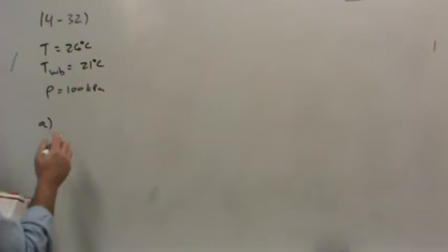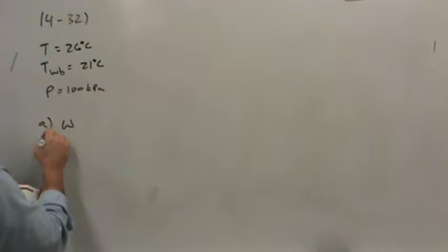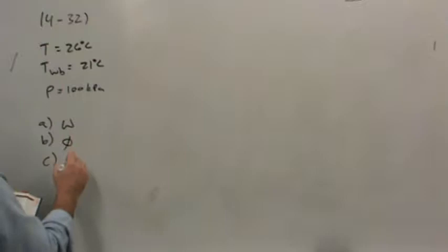And they basically just want a bunch of state data. They want the specific humidity, so that's the absolute humidity. They want the relative humidity. And they want the dew point temperature. In other words, at what temperature will the water in the air start condensing out?